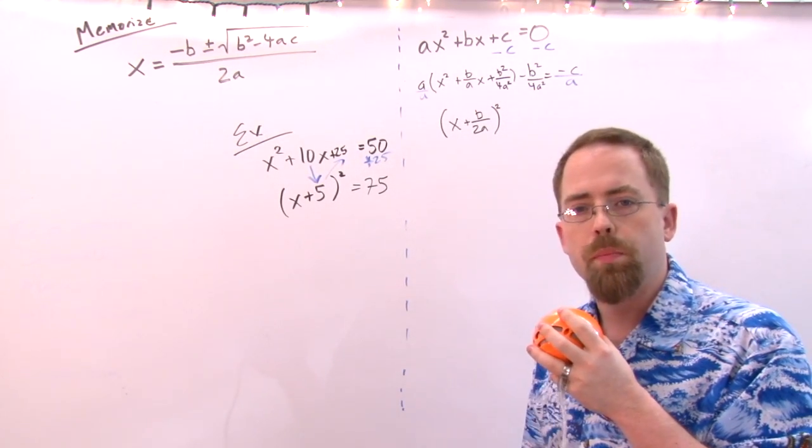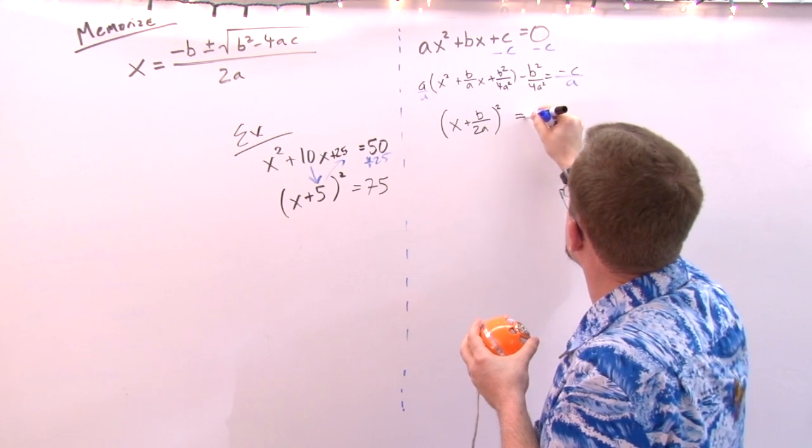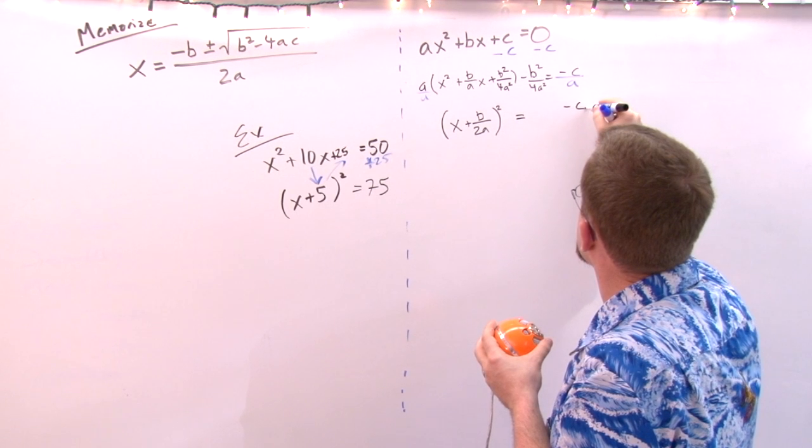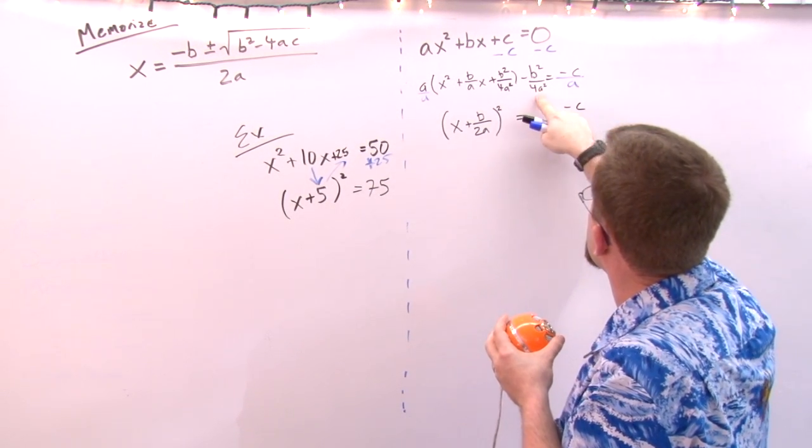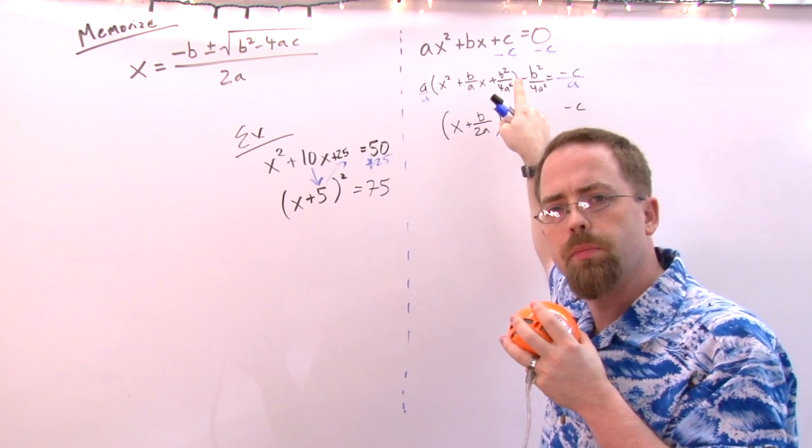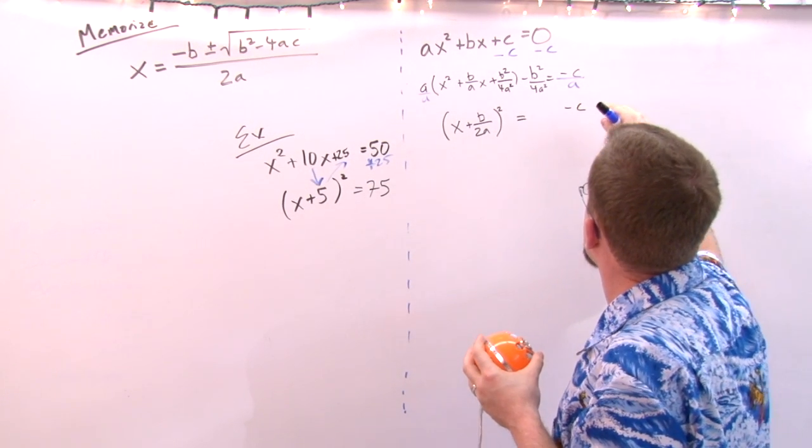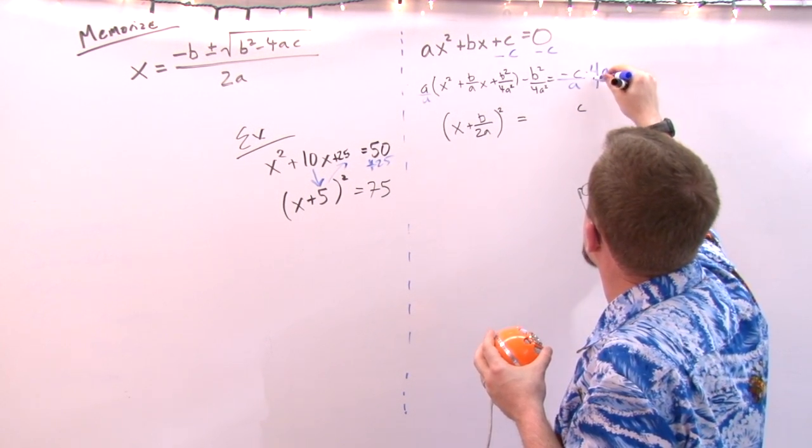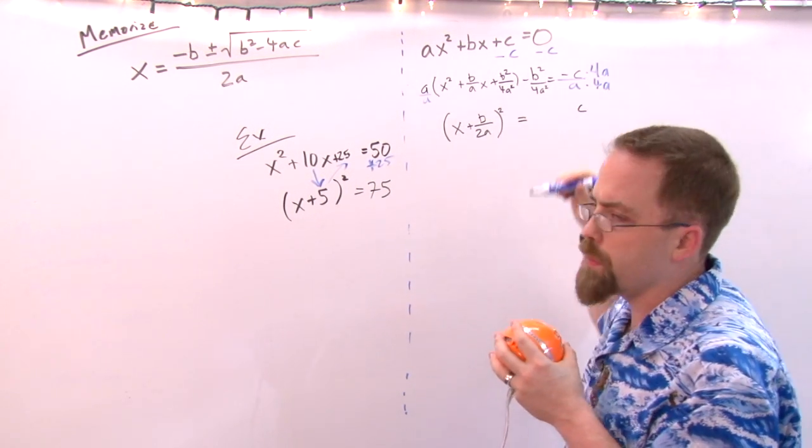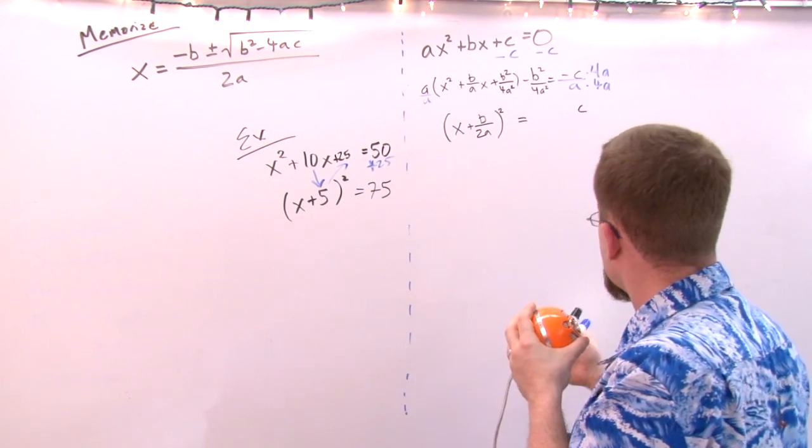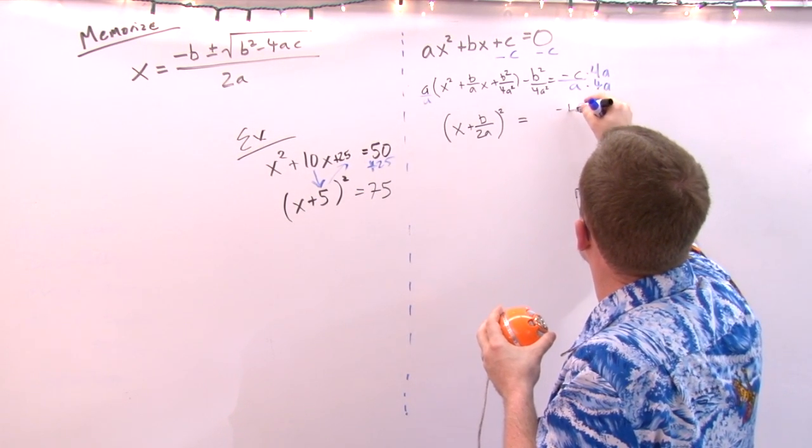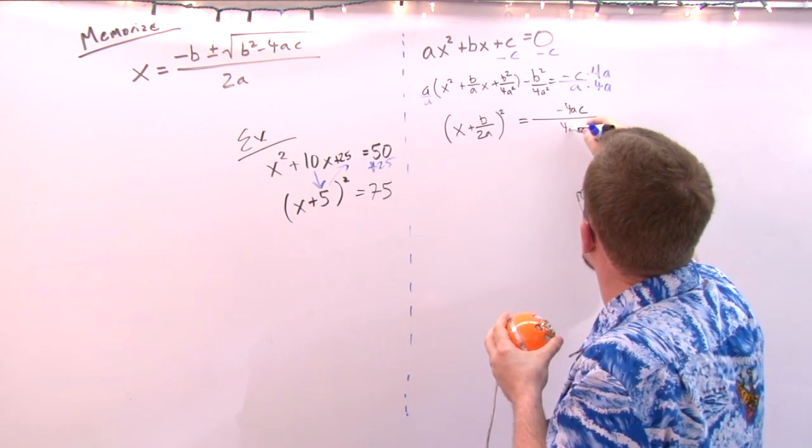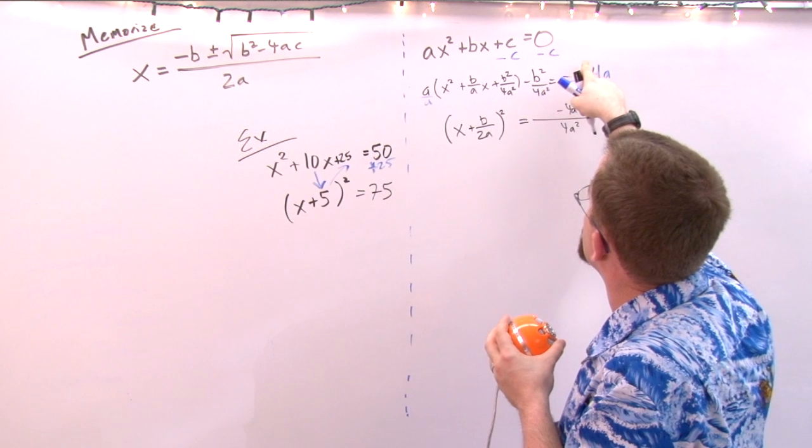We've taken this part in parentheses and turned it into a perfect square. Across the equal sign we had -c/a, but I need to get a common denominator because I'm about to bring this over. So I need to multiply this guy over here top and bottom by 4a in order to get my common denominator of 4a². That's going to turn this into -4ac/4a².